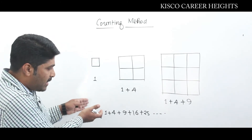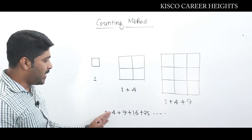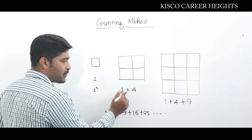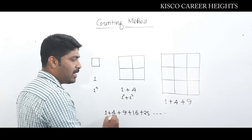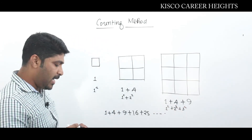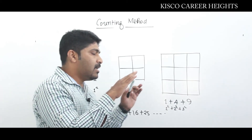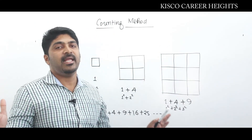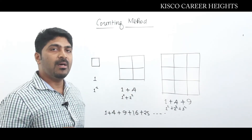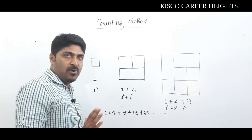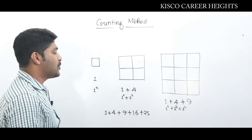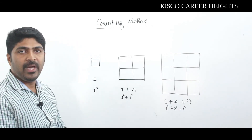By observing this series, this is simply the sum of natural squares — one squared plus two squared plus three squared, and so on. Extending this concept to the chess board, which is an eight-by-eight square grid, the total number of all possible squares is one squared plus two squared plus three squared, and so on up to eight squared.